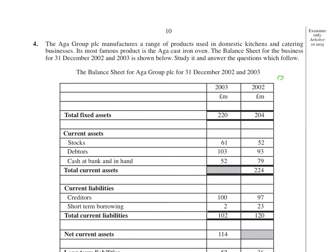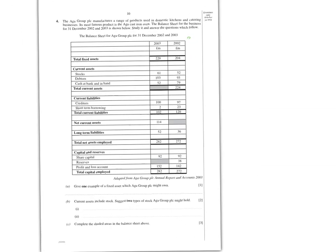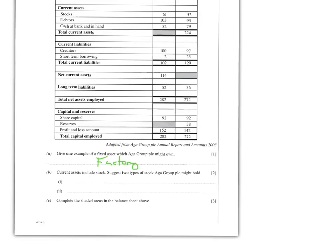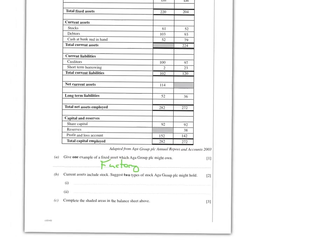This is the balance sheet for ARGA this time. First they'll ask you to give one example of a fixed asset - you can always say a factory. Other things that could be fixed assets include machinery. Part B says current assets include stock - suggest two types of stock ARGA group might hold. I've always said they could have finished stock and unfinished stock. Finished stock is where you've actually got the product completely finished - like a whole ARGA. Unfinished stock would be all the little pieces you need for the ARGA.